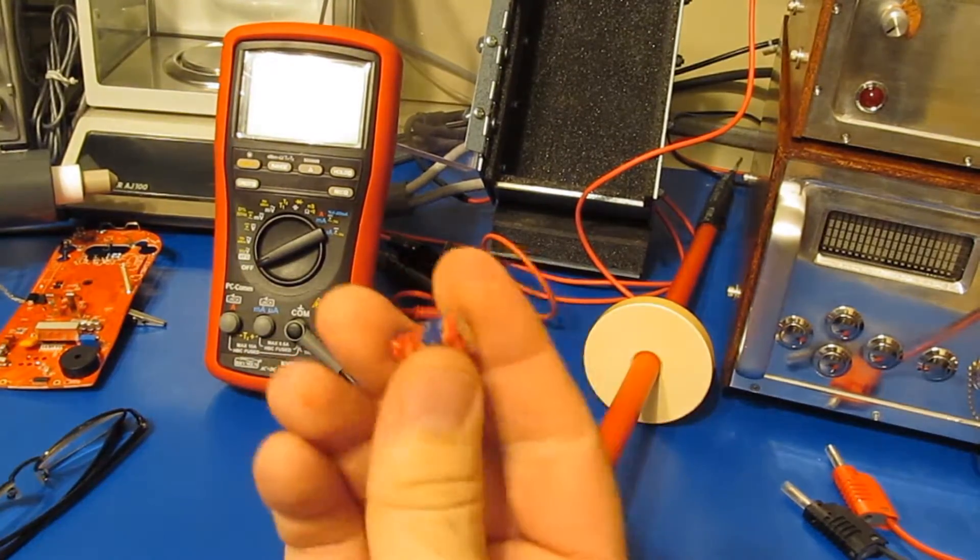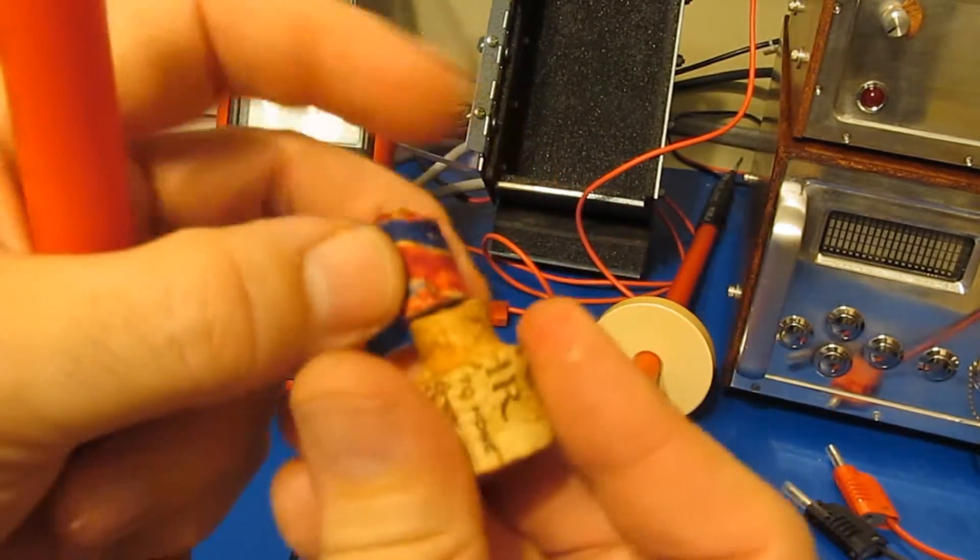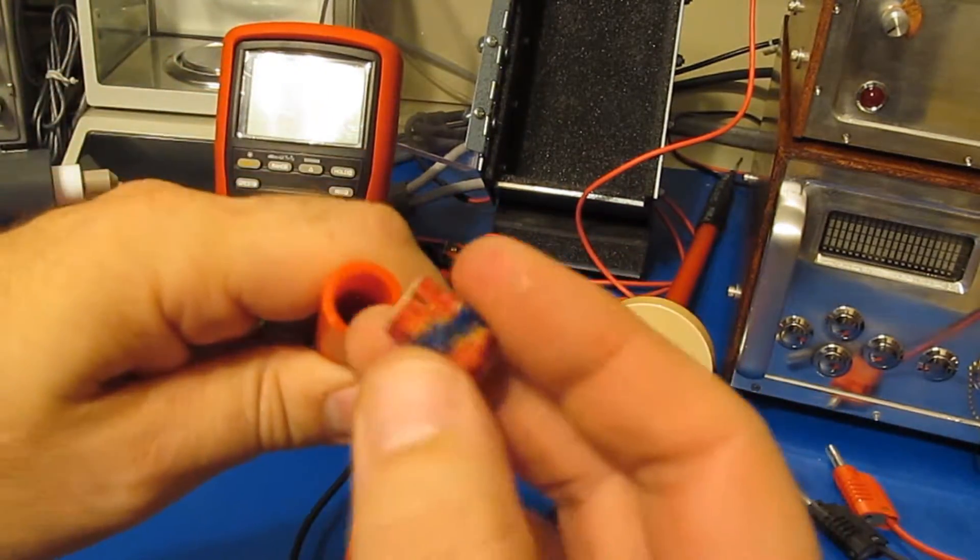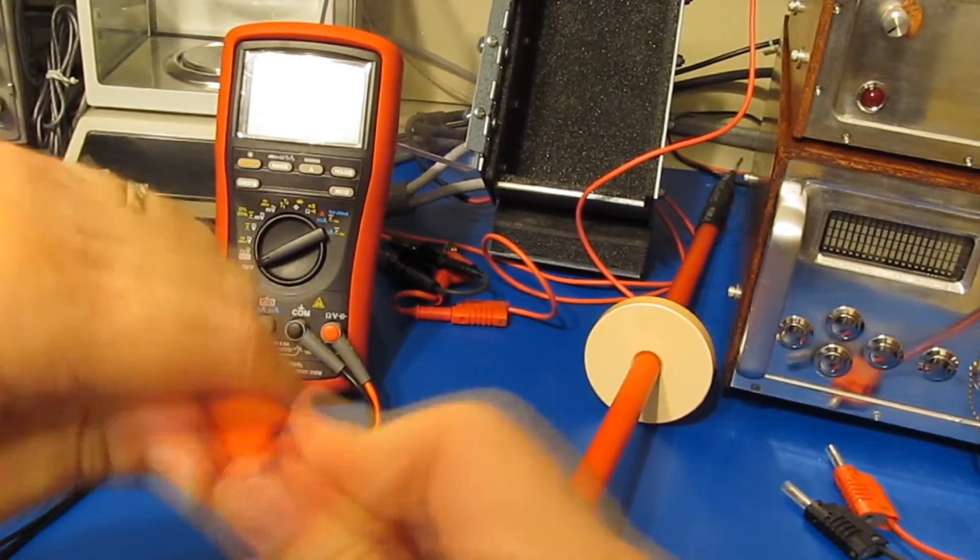So the next thing we need is a small projectile. So this is the end off of this cork. And we'll just go ahead and press fit this down inside of our PEX tube.